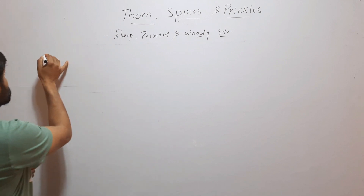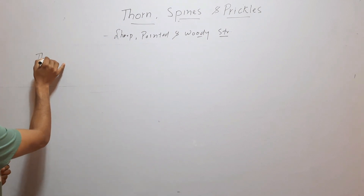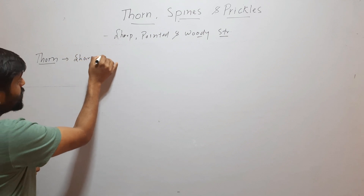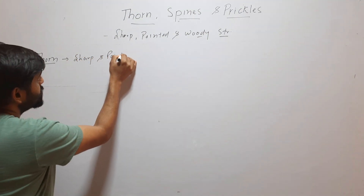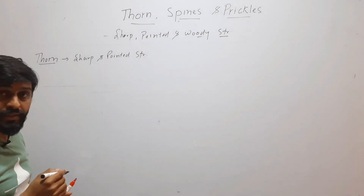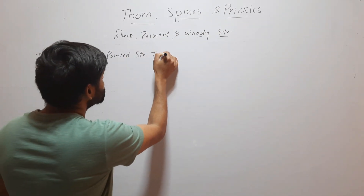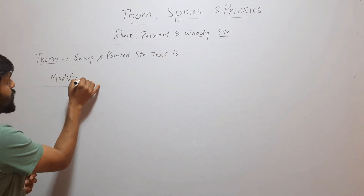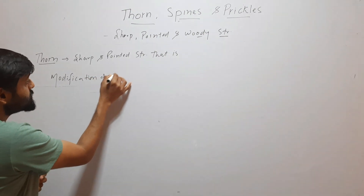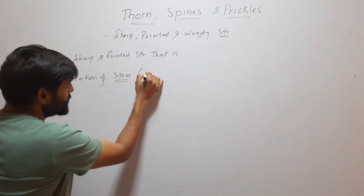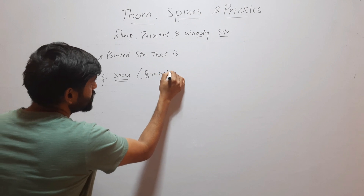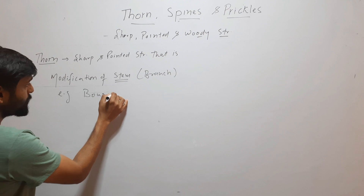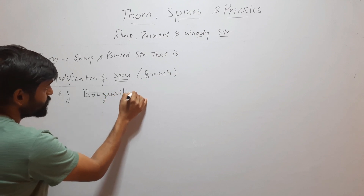First is thorn. Thorn is a sharp and pointed structure that is a modification of stem, or you can also say branch. For example, Bougainvillea.